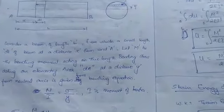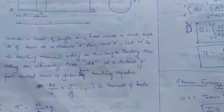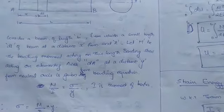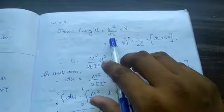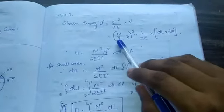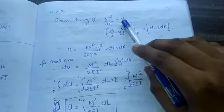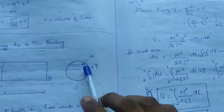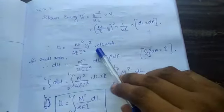From bending equation, we know from mechanics of solids that M by I equals sigma by Y equals E by R. From here, sigma equals M by I into Y. We know that strain energy is sigma square by 2E into V. Substitute this value of sigma in this equation. So U equals M by I into Y whole square into 1 by 2E into volume which is DA into small length DL.